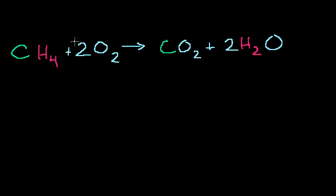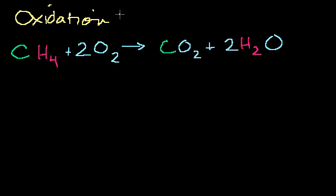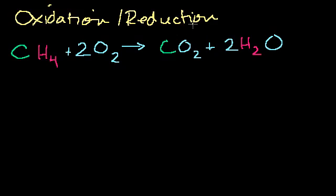We now know what an oxidation state or oxidation number is and what it means when things are oxidized or reduced. In this video we're going to study oxidation-slash-reduction reactions. That is a reaction where somebody's being oxidized — electrons are being taken away from them — and someone's being reduced, meaning they're being handed electrons. Because you have RED in reduction and OX in oxidation, these are called redox reactions. It just means a reaction where something is getting oxidized and something else is getting reduced.